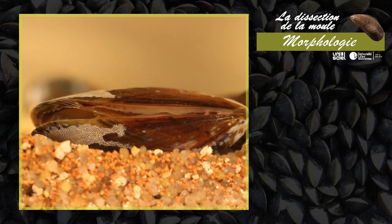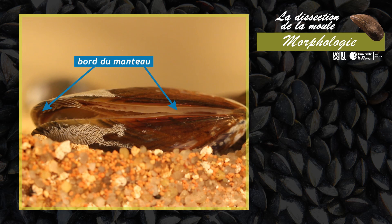Le muscle adducteur postérieur est très développé. Quand il se relaxe, il est visible par l'entrebaillement des deux valves. La coquille, qui joue le rôle de squelette externe, est produite par le manteau. Les bords du manteau sont observables lorsque les valves s'entrouvrent.